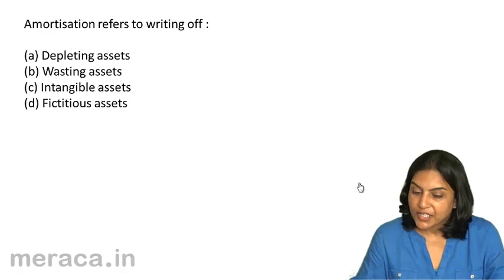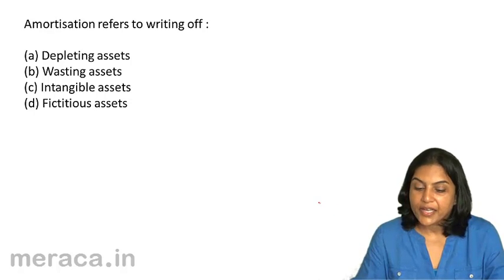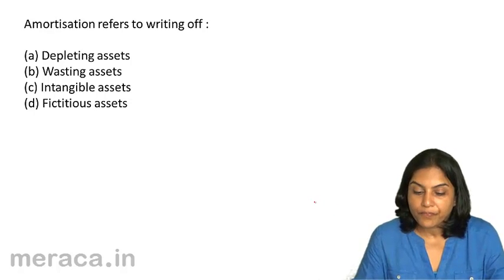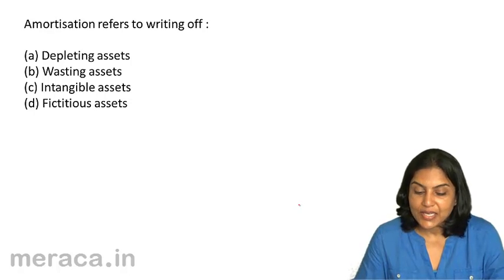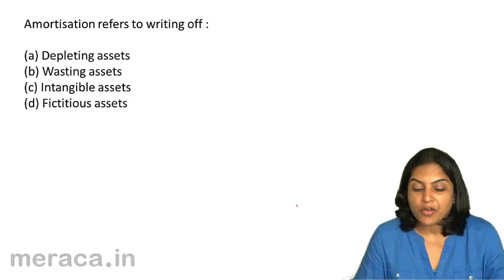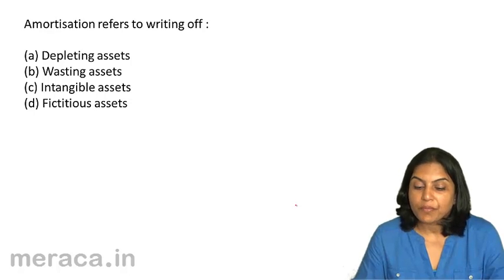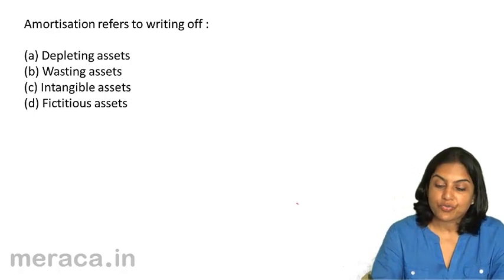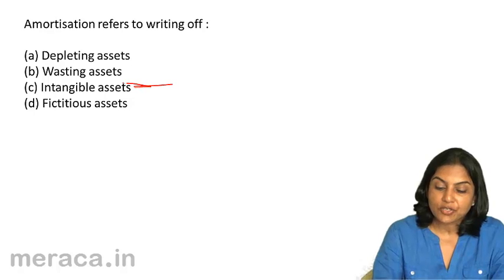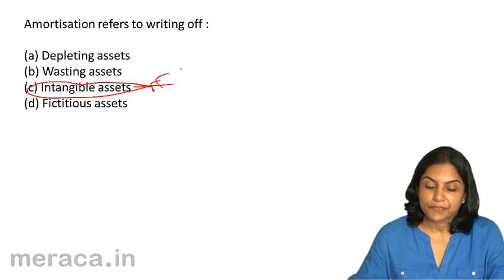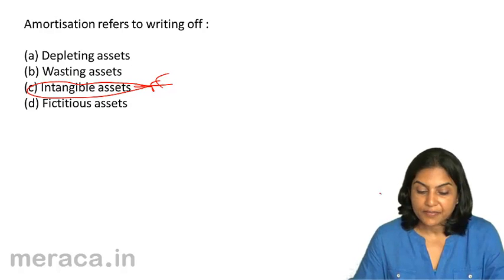Amortization refers to writing off: A. depleting assets, B. wasting assets, C. intangible assets, D. suspicious assets. Amortization normally refers to writing off intangible assets. The answer is C.